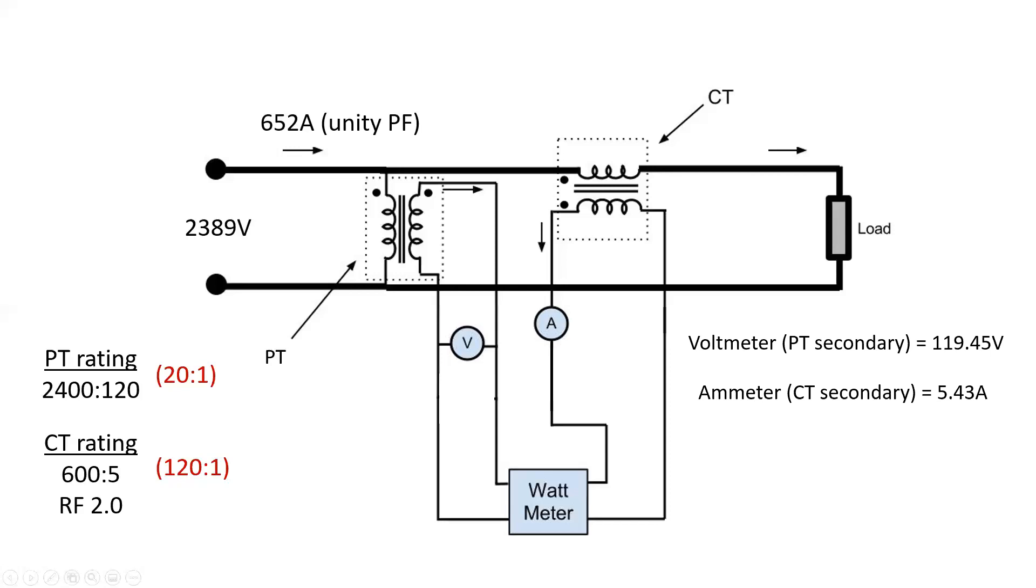So, if we take these two values together, if we were only given the voltmeter and the ammeter values and we knew what the ratios were of those two devices, the PT and CT, we could still work out what the total amount of watts was of the main system. And the way that we would do that is we would take 20, which is our PT ratio, times 119.45 volts and multiply it by 120, which is the ratio of our CT, and multiply it by 5.43, giving us 1.55 megawatts worth of power. Now, I understand why would you go through this process if you already knew 652 and 2389? And the answer is, we probably wouldn't. But remember, the only way we're going to be able to validate that there's 652 amps is through a CT that has a ratio. And the only way we can validate there's 2389 is through a PT and a PT ratio.